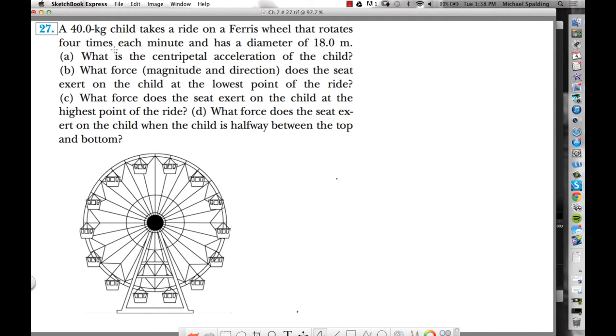Problem 27. We got this 40-kilogram kid riding this Ferris wheel that rotates four times each minute. Four times each minute - that's an angular velocity. The angular velocity is four revolutions in 60 seconds. Revolutions per second, that is angular velocity.